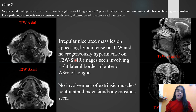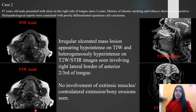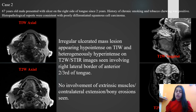The second case is a 67-year-old male who presented with an ulcer on the right side of the tongue for two years. He was a chronic smoker and tobacco chewer. Histopathological reports were consistent with poorly differentiated squamous cell carcinoma. MRI images revealed an irregular ulcerated mass lesion appearing hypointense on T1-weighted images and heterogeneously hyperintense on T2-weighted images in the right lateral border of the tongue, with no involvement of extrinsic muscles, contralateral extension, or bony erosions.